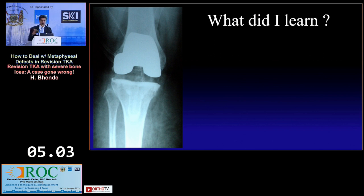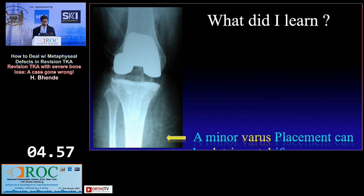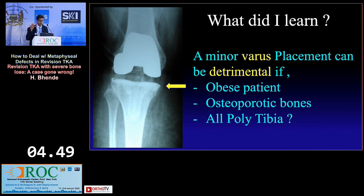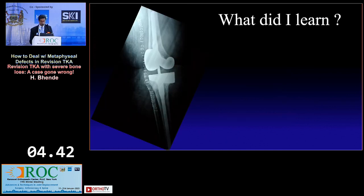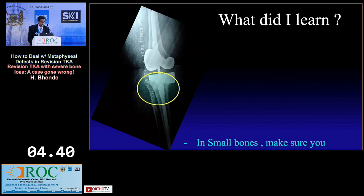What did I learn from this experience at the beginning of my practice, 20 to 23 years ago? Number one: even a minor varus placement was detrimental in obese patients with osteoporotic bones, especially when using an all-poly tibial component, because all-poly tibia lacks metal stability. A minor variation can cause collapse of bone below the implant.